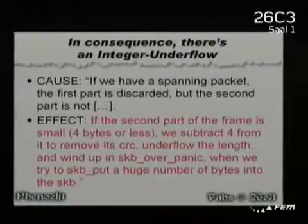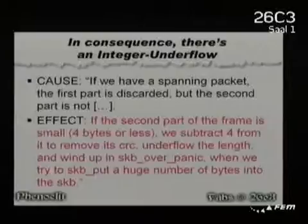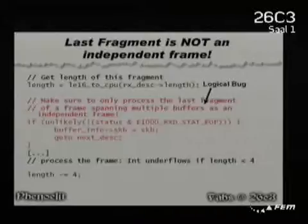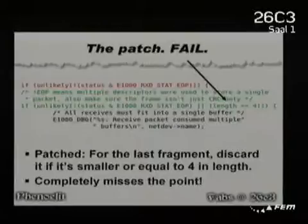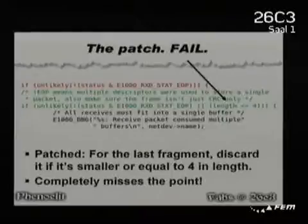The cause: if we have a spanning packet, the first part is discarded but the second part is not — and it is interpreted as an independent frame. The effect: if it is smaller than 4 bytes you get the integer underflow. This is the code — there's a logical bug, the important comment says 'process the last fragment,' and down there is the integer underflow. And this is the patch — all they did was check whether it will be smaller than 4 bytes. Epic fail. They didn't even understand the bug and completely missed the point.